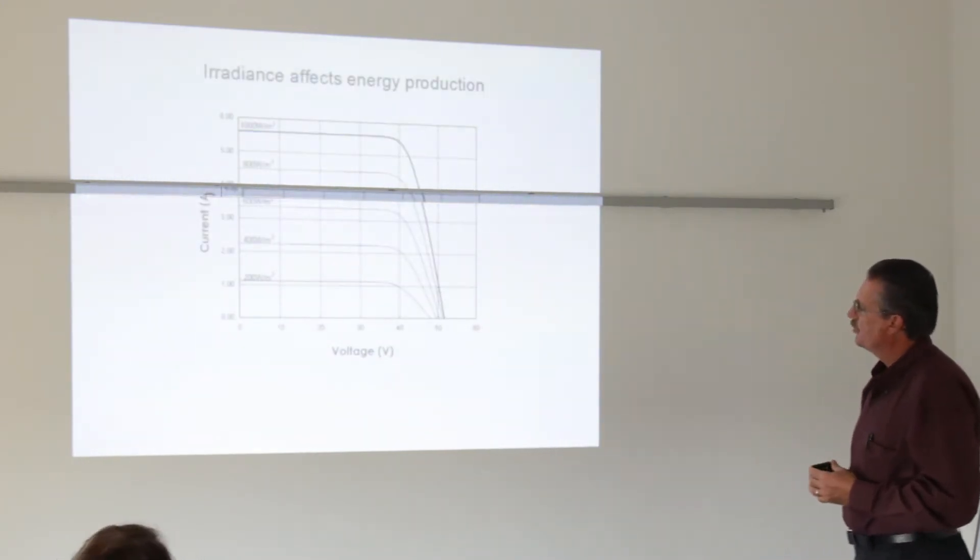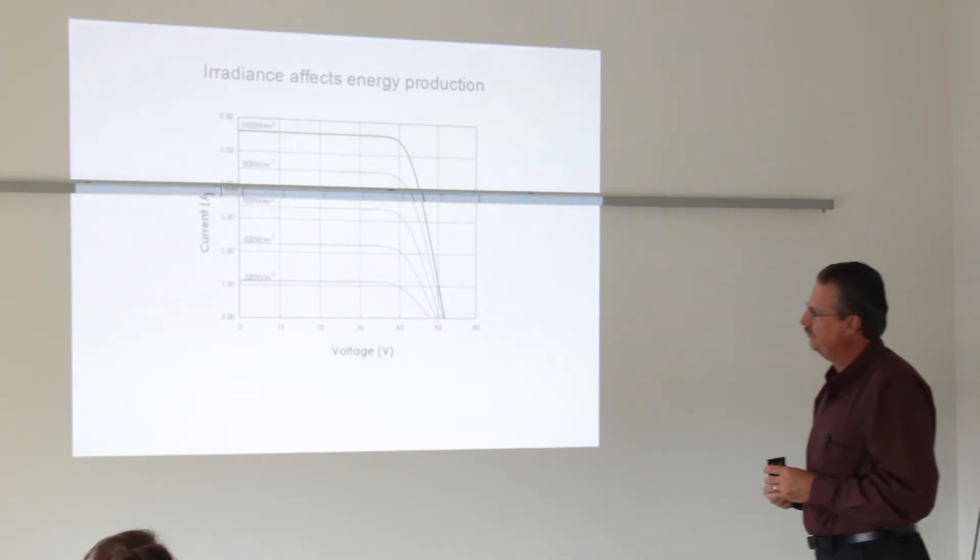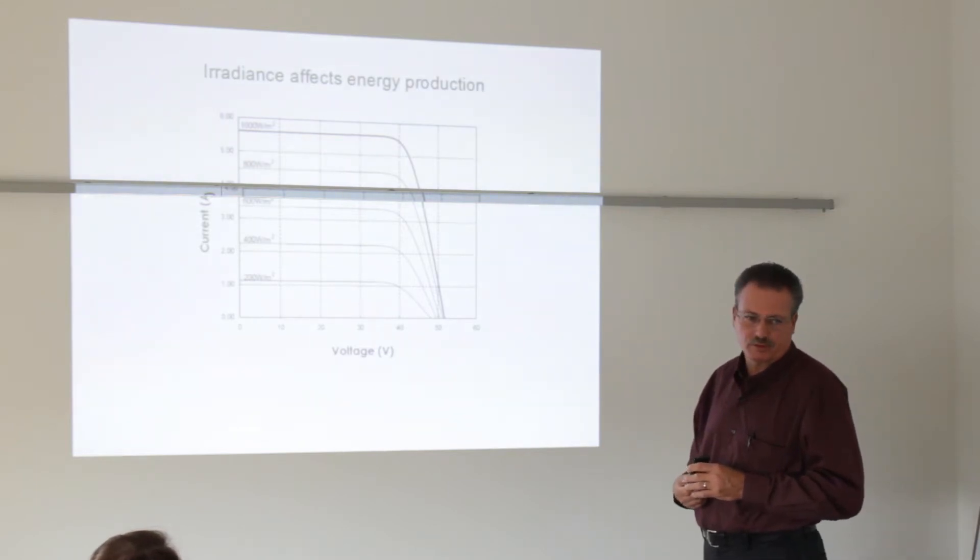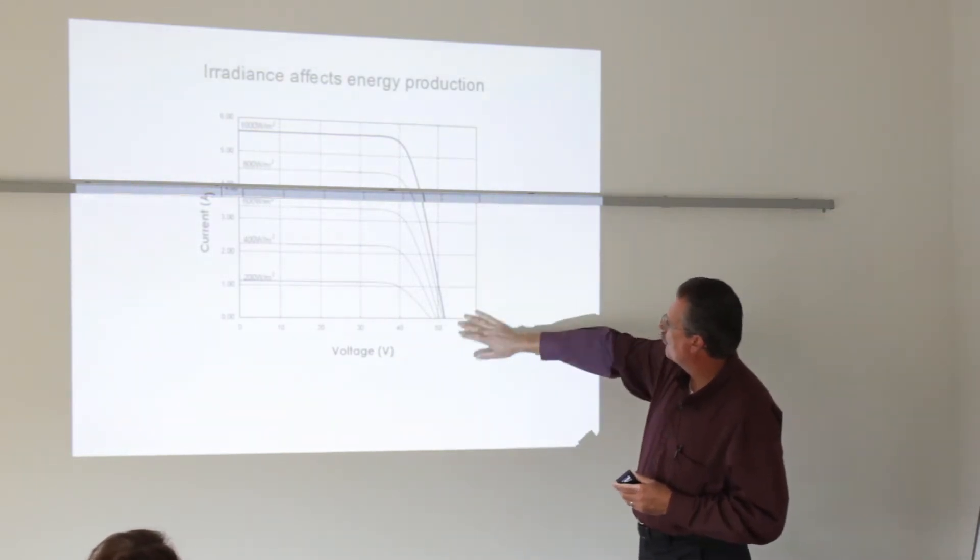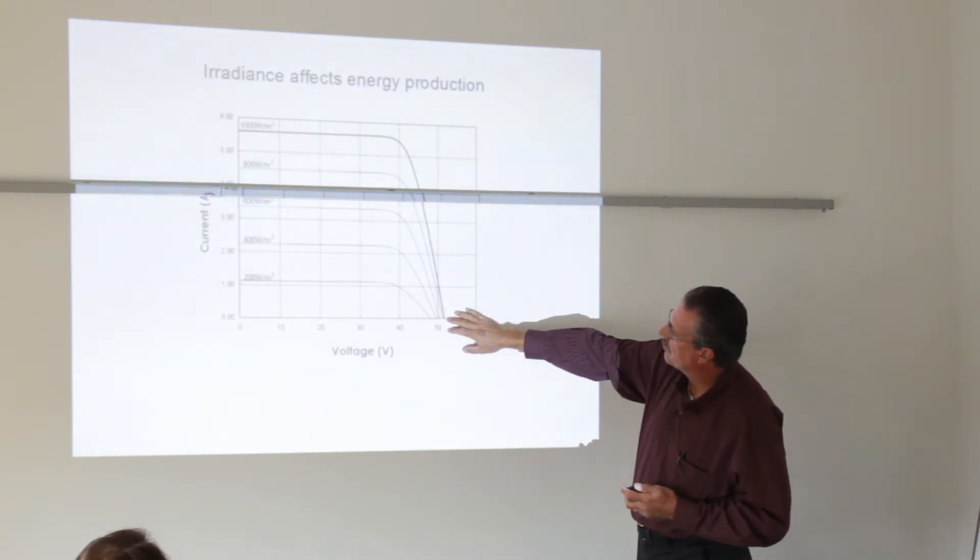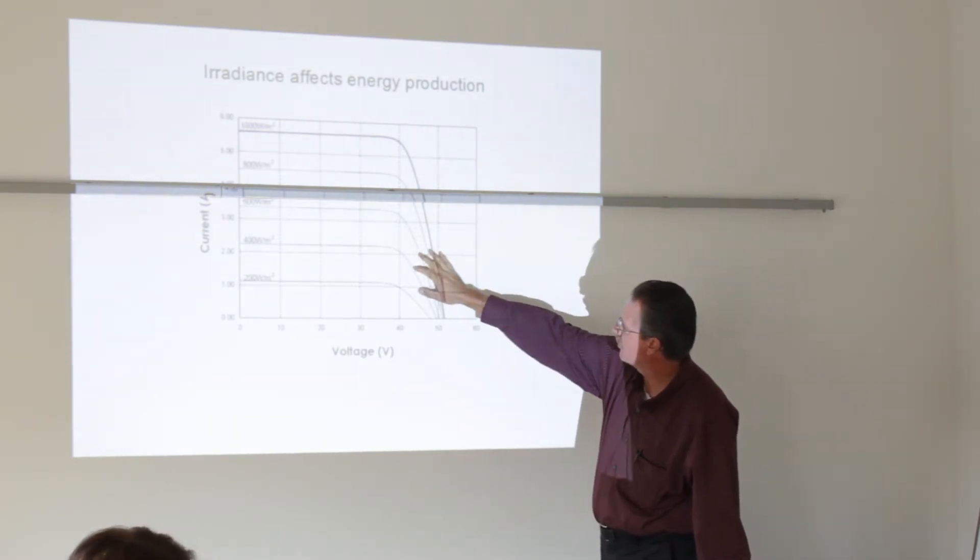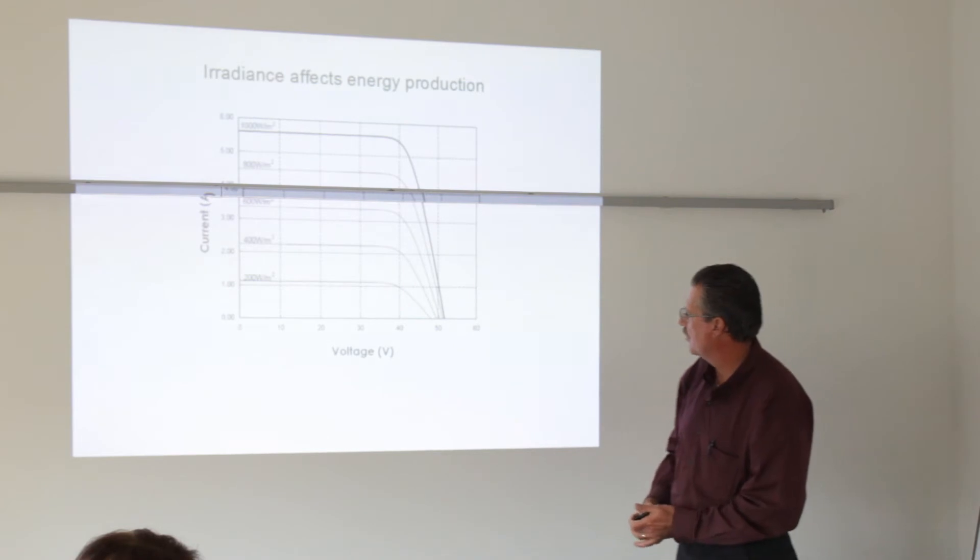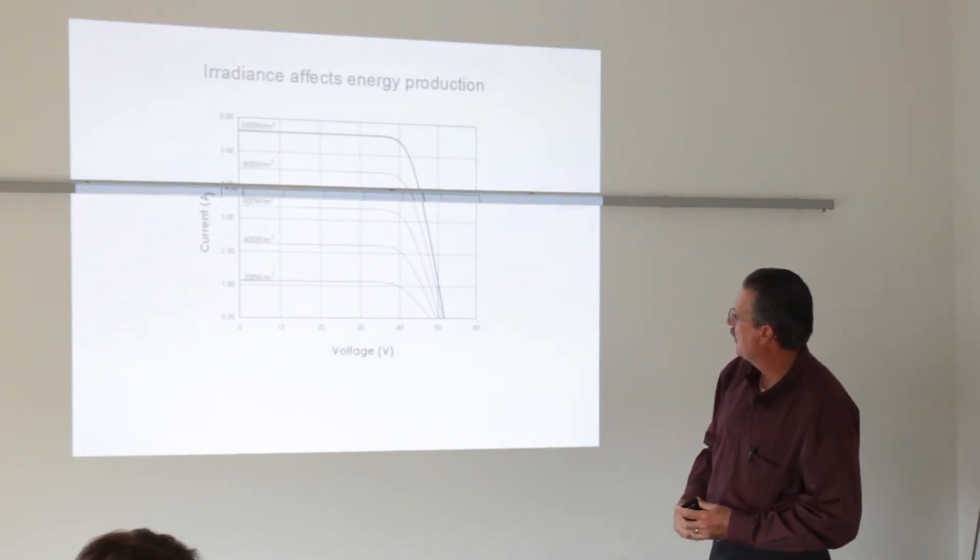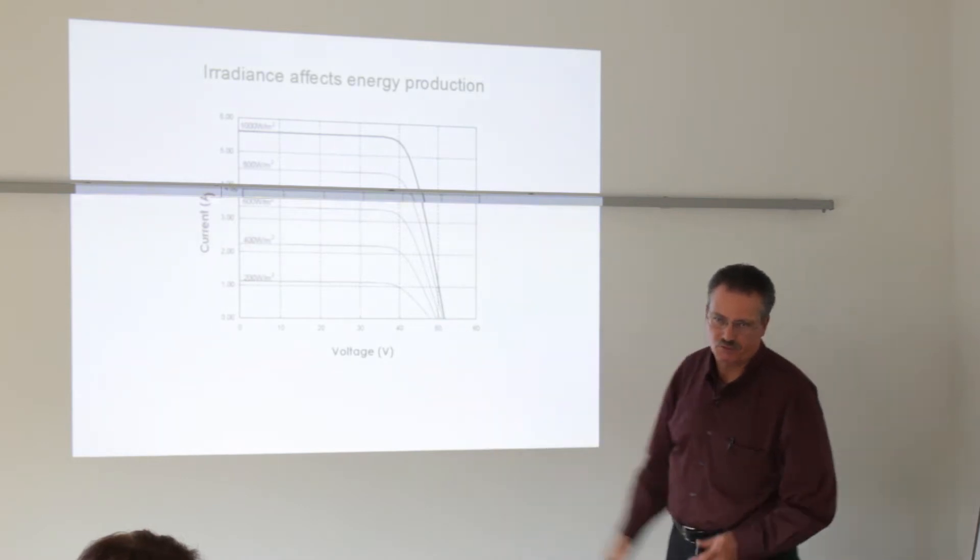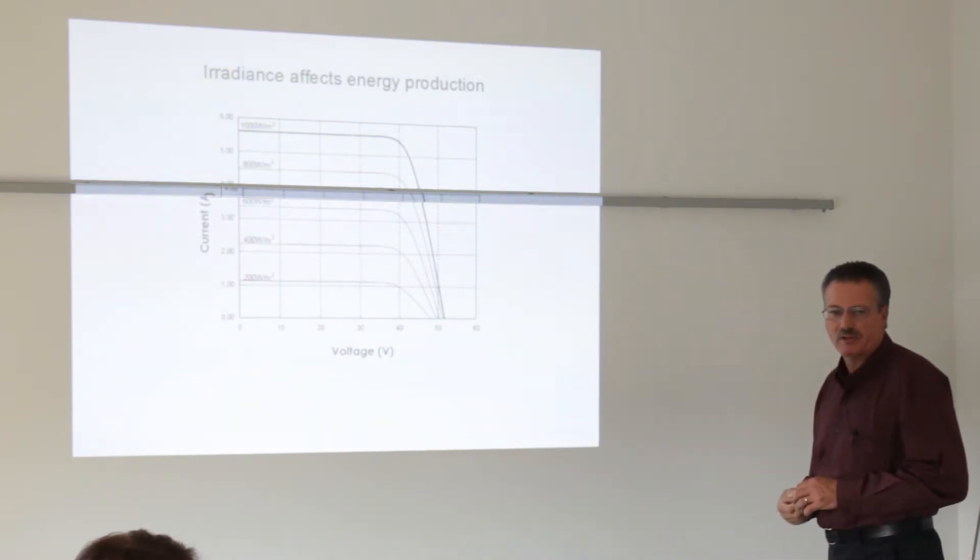Irradiance affects energy production. Just because it may be a little bit cloudy doesn't mean things stop working, they just don't work as well. Notice our top line, which is our standard 1,000 watts per square meter. But if you drop down to 800, which is what we see on average, or 600, 400, 200 watts per square meter, you'll see a reduction in energy production, but you don't see it stop. You still have energy production even on a cloudy day.